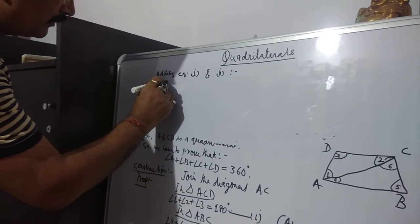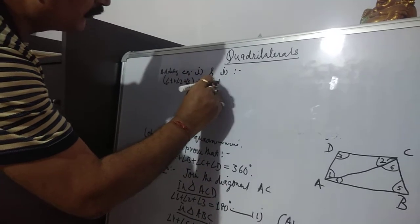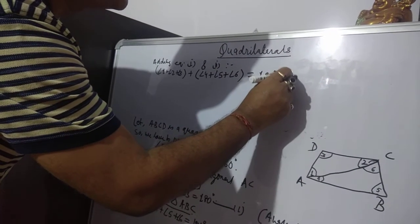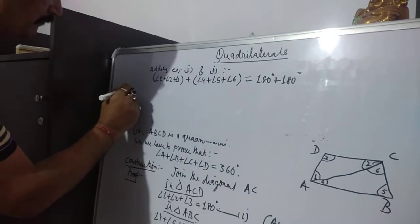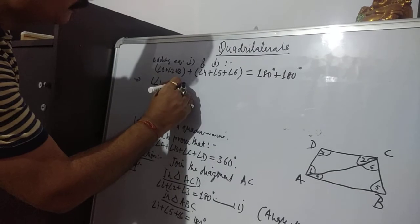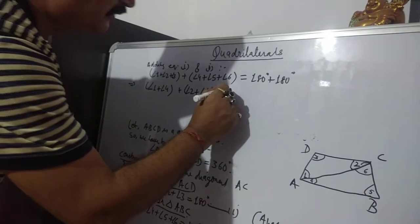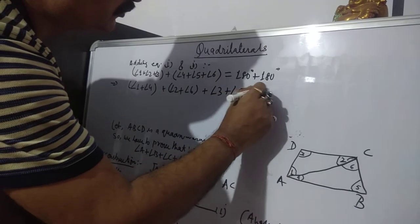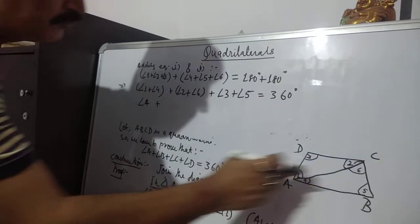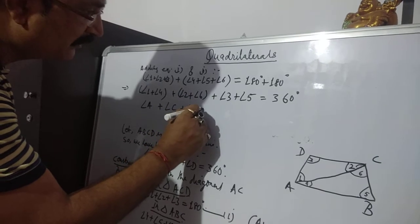So angle 1 plus angle 2 plus angle 3 plus angle 4 plus angle 5 plus angle 6 equals 360 degrees. Rearranging: angle 1 plus angle 4 gives angle A, angle 2 plus angle 6 gives angle C, angle 3 is angle D, and angle 5 is angle B.